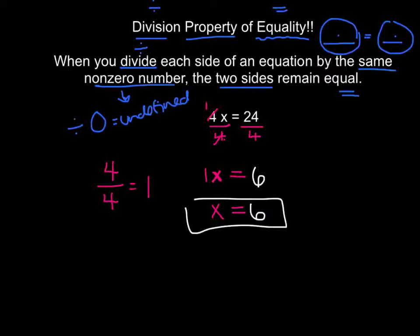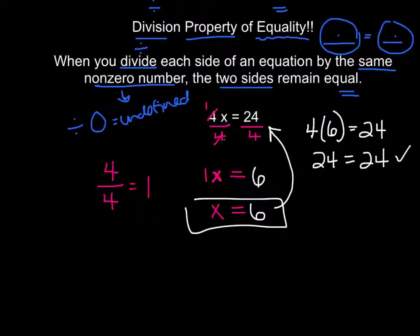And we can actually do the work here. We can see if that makes sense by checking our work. So we can put this back into our original equation. We have 4 times if x was equal to 6, 4 times 6 is equal to 24. Does that check out? 24 is equal to 24. Awesome. We did it.